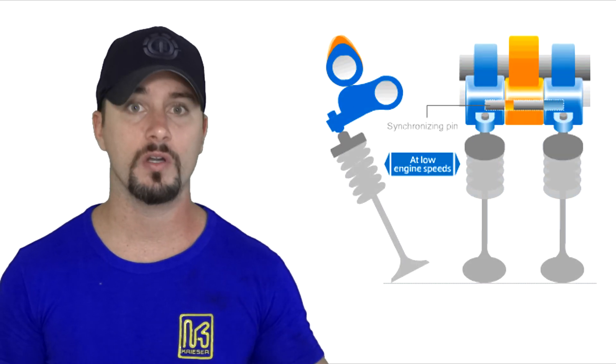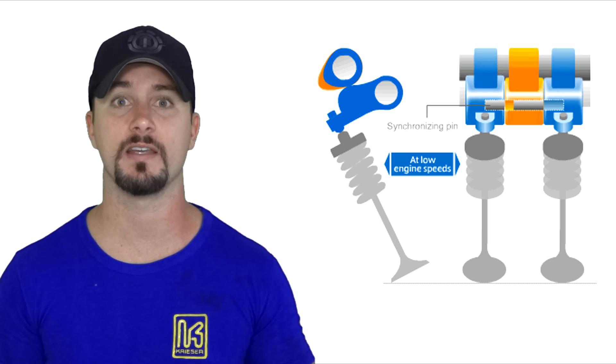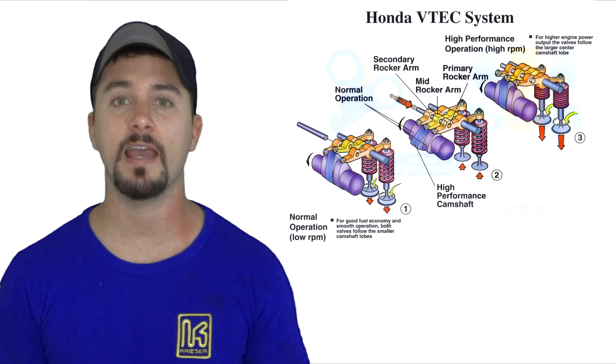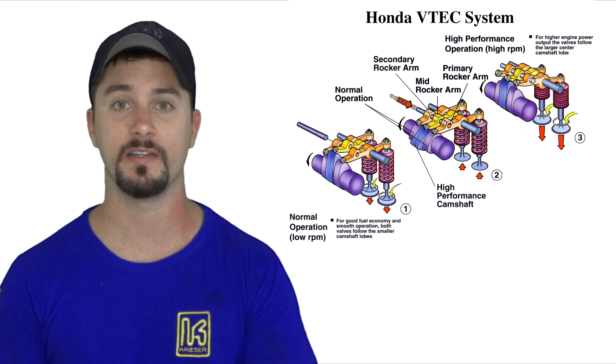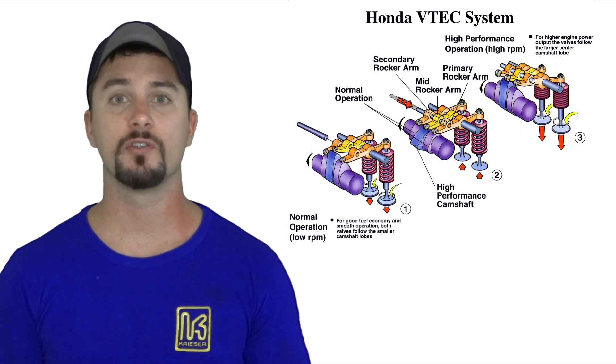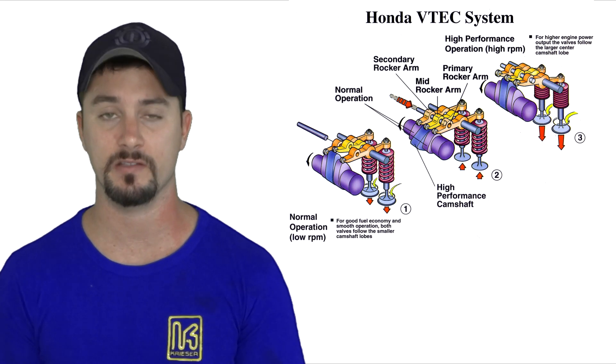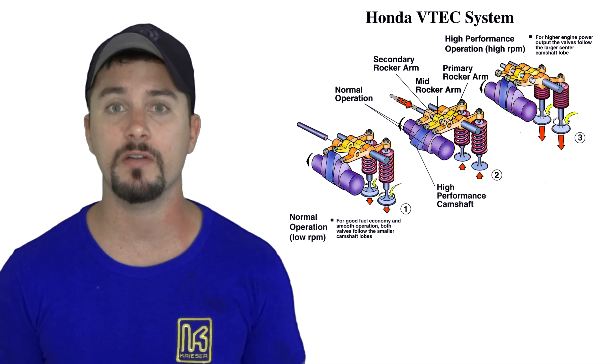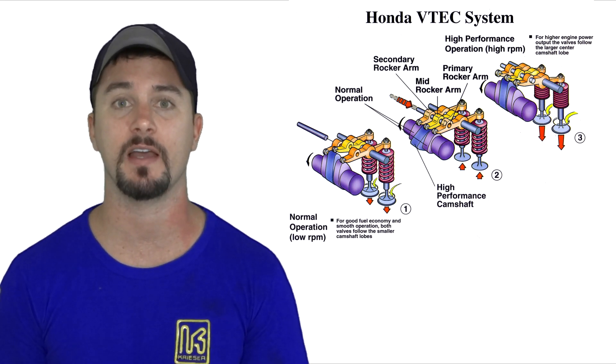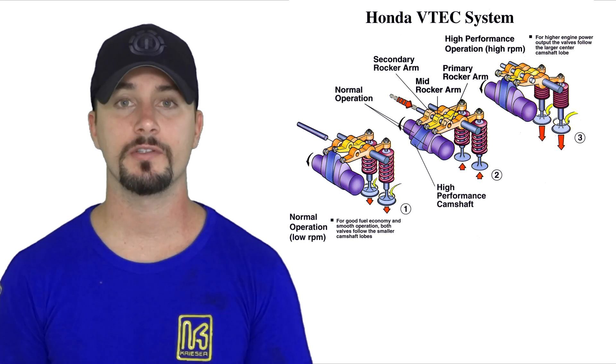Now discussing the cam and rocker arm assembly of the VTEC side: if you have a dual cam VTEC, that means you have VTEC on both the intake and the exhaust valves. If you have a single cam VTEC, you only have VTEC on the intake side. There are three rocker arms on a VTEC system: the primary, the mid, and the secondary.